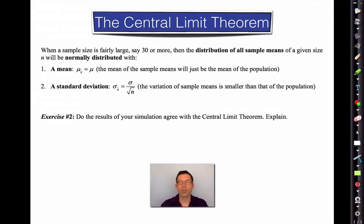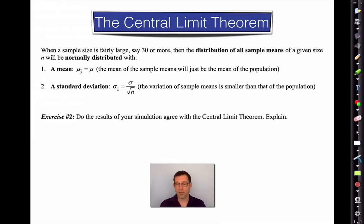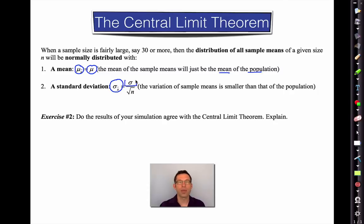The Central Limit Theorem is one of the most important theorems in all of statistics. It says: when a sample size is fairly large — say 30 or more — the distribution of all sample means of a given size will be normally distributed. The amazing thing is it doesn't matter what the original population looked like. The mean of the sample means equals the overall population mean.